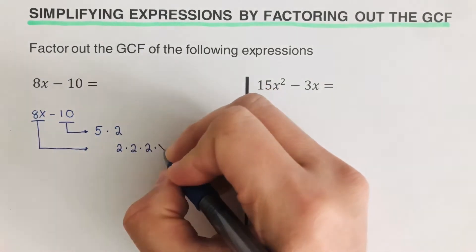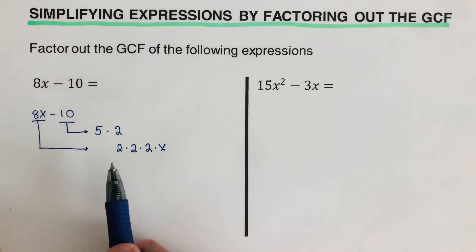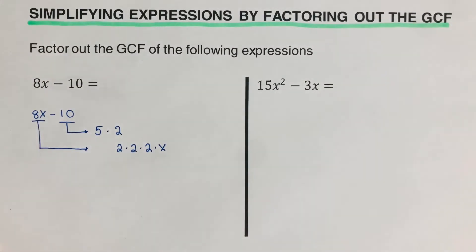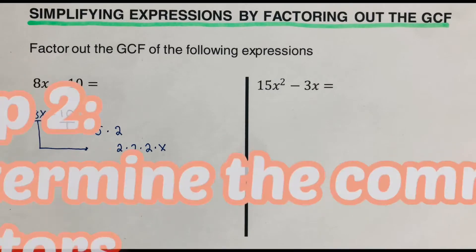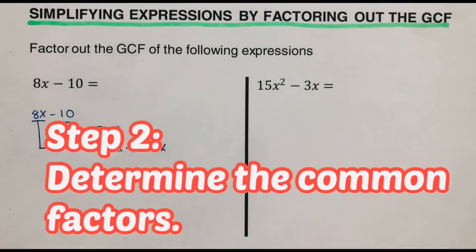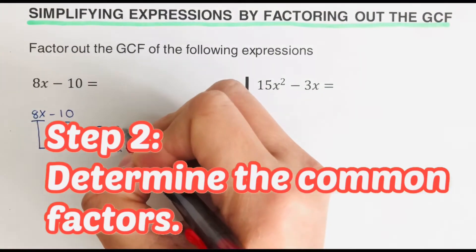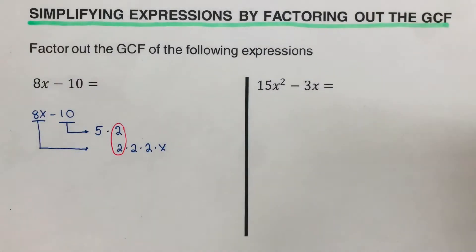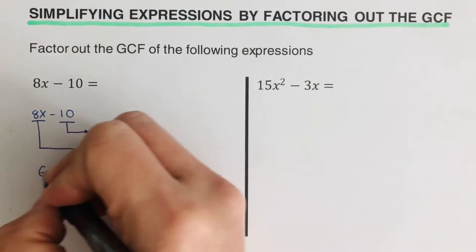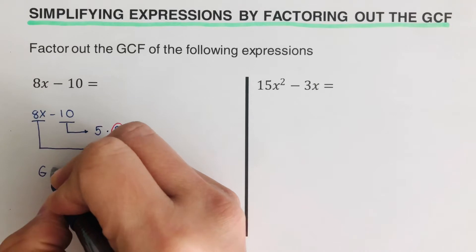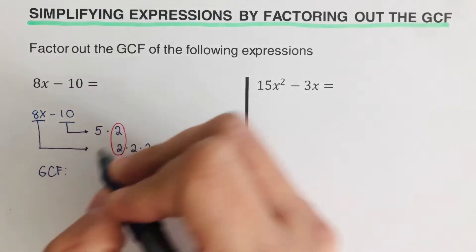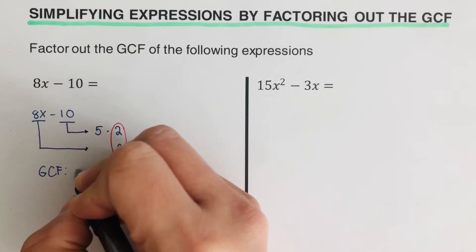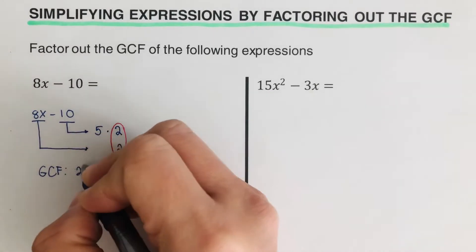Then we have an x, so this is the factored form for 8x. Next we move on to the second step: determine the common factor. In this case the common factor is 2, so our GCF is 2.